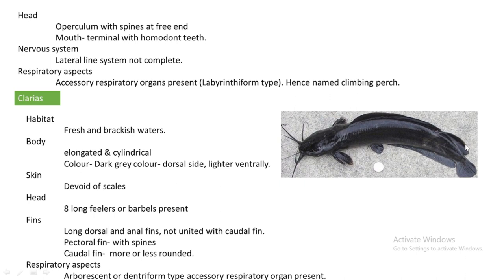Even though the dorsal fin and anal fin are long, they are not united with the caudal fin, as can be clearly seen in the image. The pectoral fin has one spine. The caudal fin is more or less round in shape. Regarding respiratory aspects, it also possesses an accessory respiratory organ called the arborescent or dendriform organ.